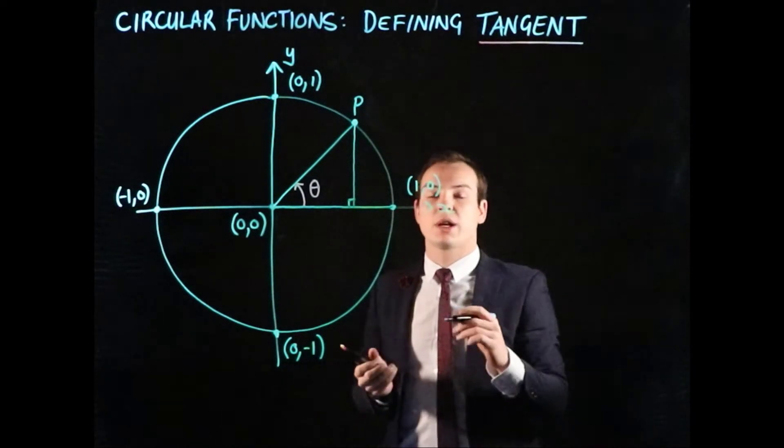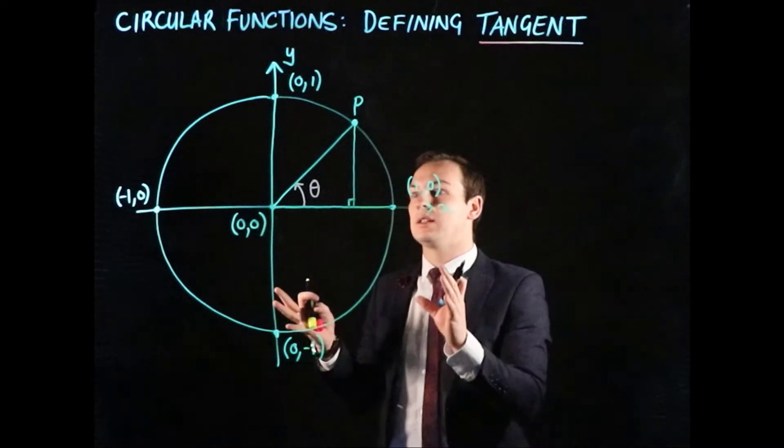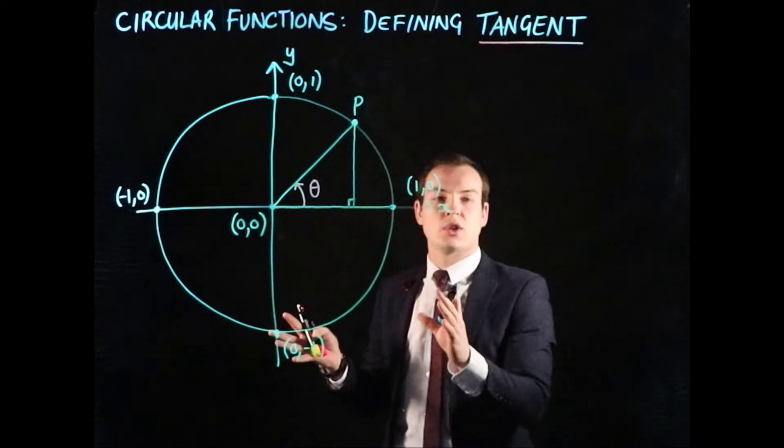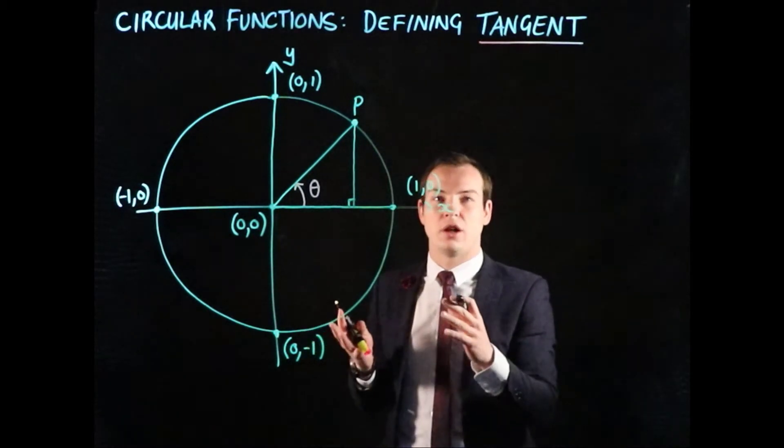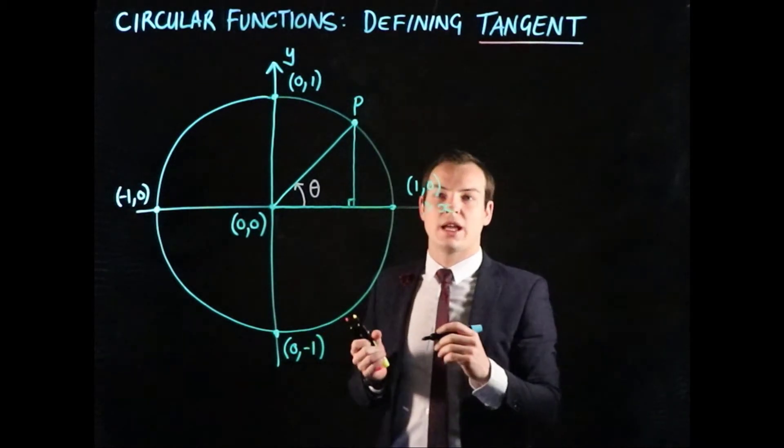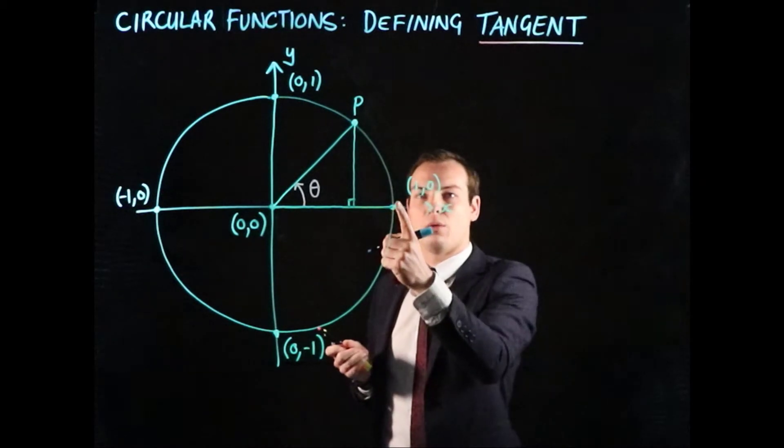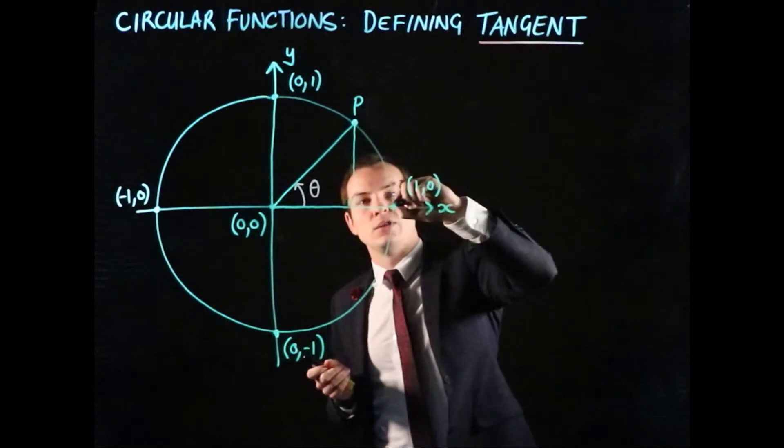To start with, we're going to draw another line into this construction. On this unit circle we've been working with, we want to add a tangent line at the point (1,0). Let's go ahead and do that now.